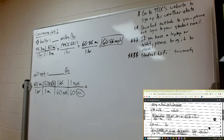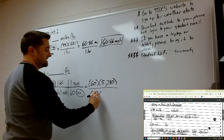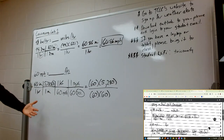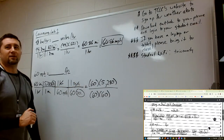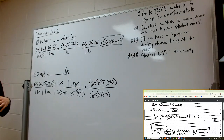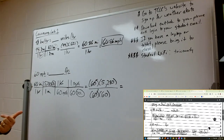Copy everything from the top and bottom. The top is 60 times 5,280, and the bottom is 60 times 60. Since we still have it factored, notice there's a pair of 60s we can cancel out. Then divide 5,280 by 60 and you get 88 feet per second.